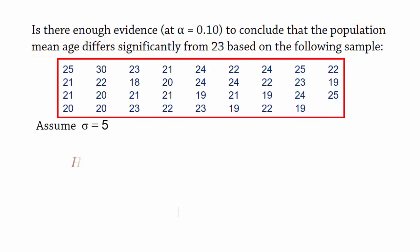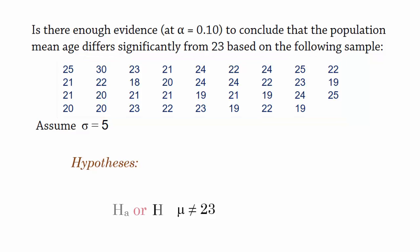Since we're testing if the mean is different from 23, the alternative hypothesis is mean not equal to 23, and the null hypothesis will be mean equals 23. We will be conducting a Z test because the population standard deviation is assumed to be 5.